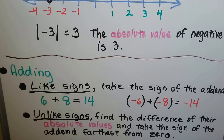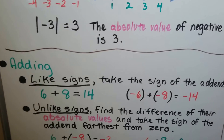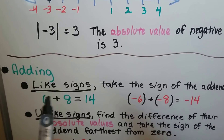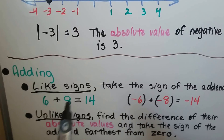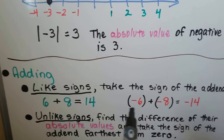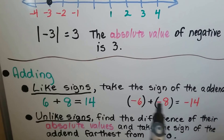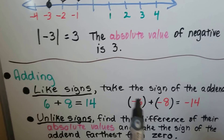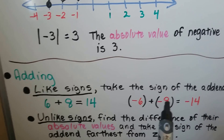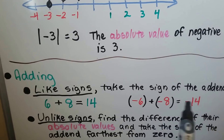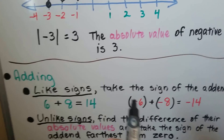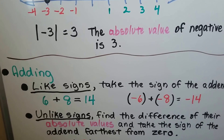When we're adding like signs, we take the sign of the addends. If we're adding two positive numbers, we just add them together and the answer is going to be positive. If we're adding two negatives, they have like signs, so we add the 6 and 8 together and give it the same sign as the addends. They're both negative, so the answer is going to be negative.